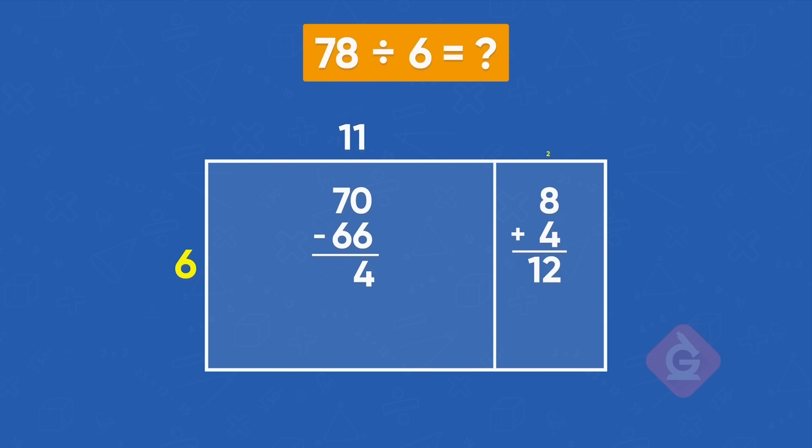Great. I know that 6 times 2 equals 12. Excellent. Then we show that 6 times 2 is 12. 12 minus 12 is 0. 11 plus 2 equals 13.